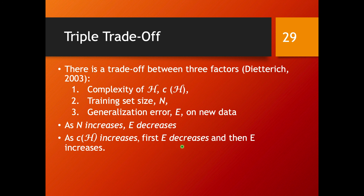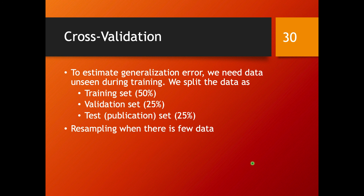The difficulty, of course, is that this is about generalization error on new data — something you don't have in front of you, and very often you don't have information about the distribution that new data follows. You will have to do something to estimate this generalization error on new data. Here comes the idea of cross-validation: you get a data set and keep part of it on the side, not using it for training.